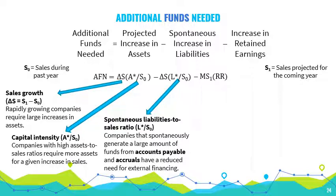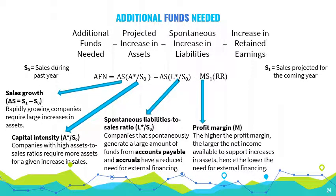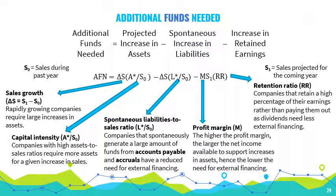The profit margin is computed as net income over sales. The higher the profit margin, the larger will be the net income available to support increases in assets, and the lower will be the need for external financing. The retention ratio refers to the percentage of net income that is retained in the business. The higher the retention ratio, the higher will be the retained earnings and the lower will be the need for external financing.